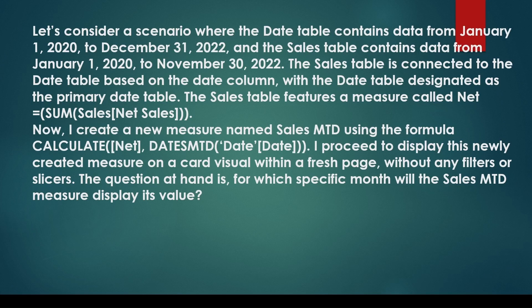The sales table features a measure called 'net.' An additional measure named 'Sales MTD' is created with the formula CALCULATE(net, DATESMTD('Date'[Date])). This newly created measure is displayed on a card visual on a fresh page without any filter or slicer. The question is: for which month will the Sales MTD measure display its value?